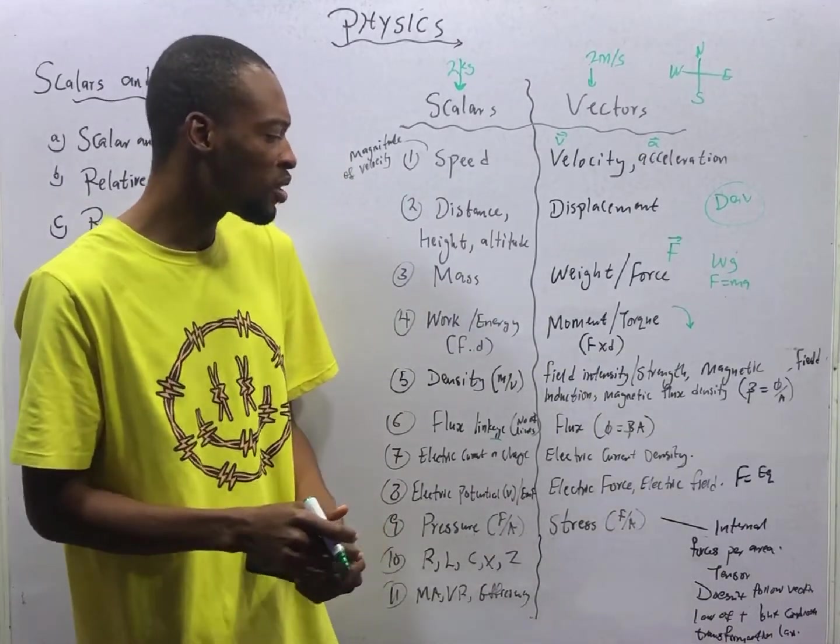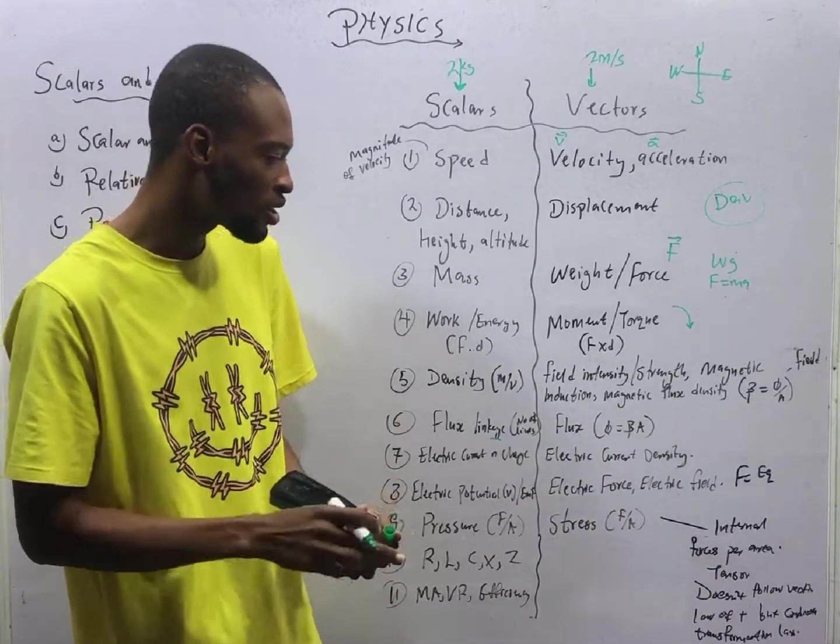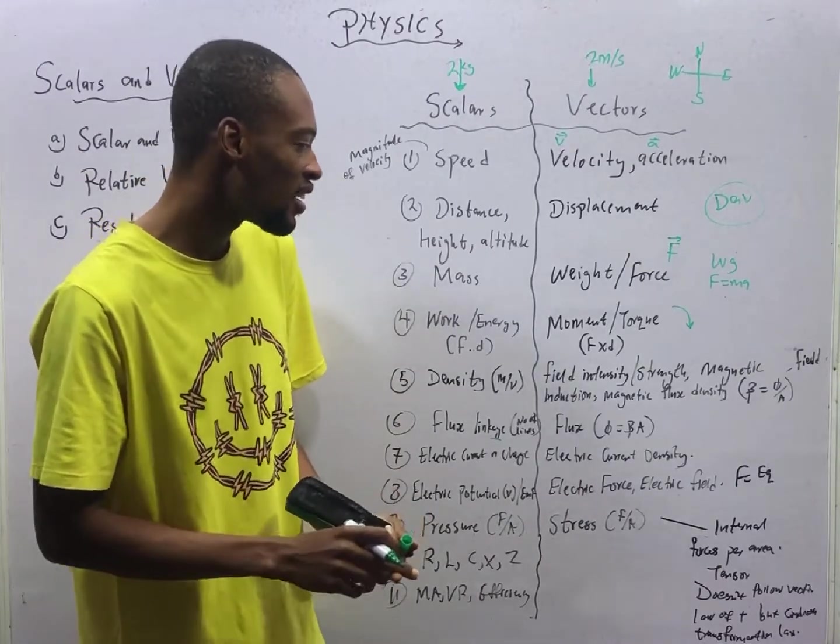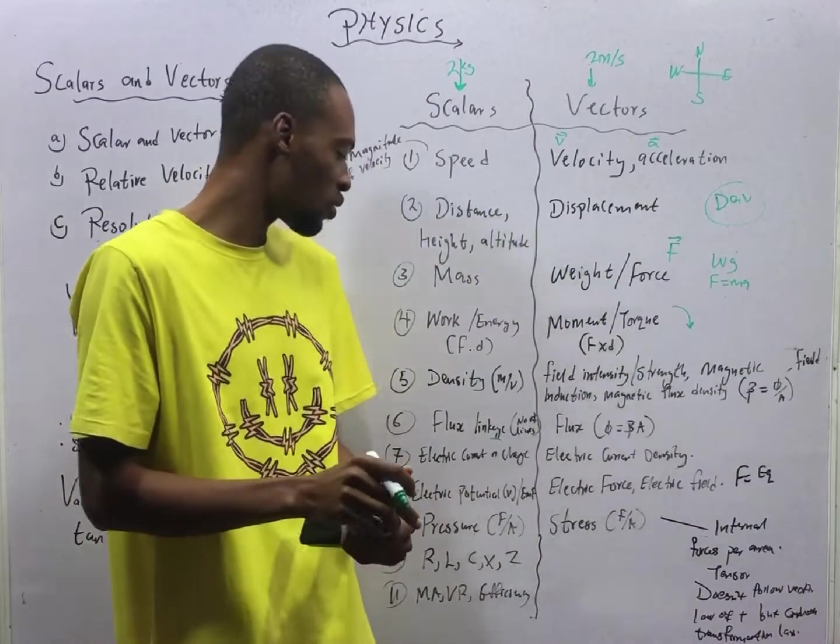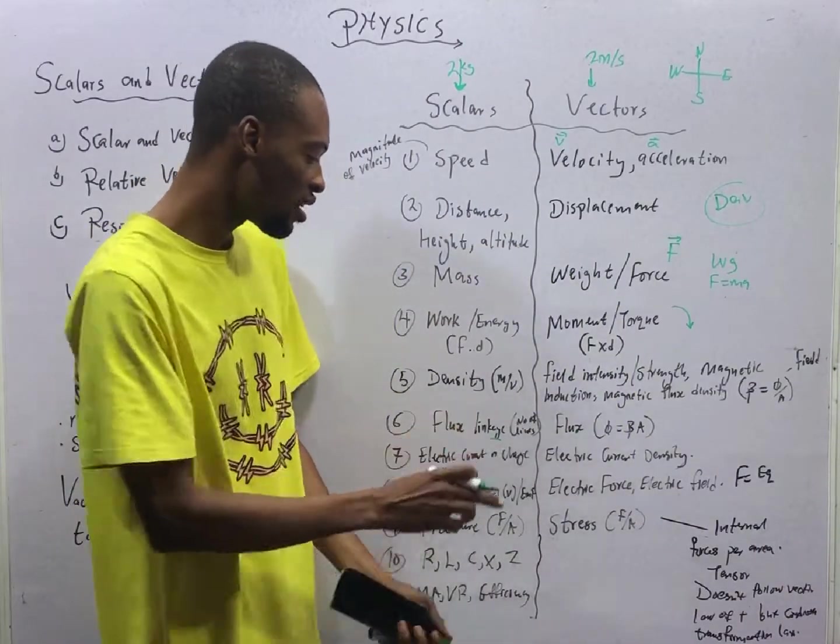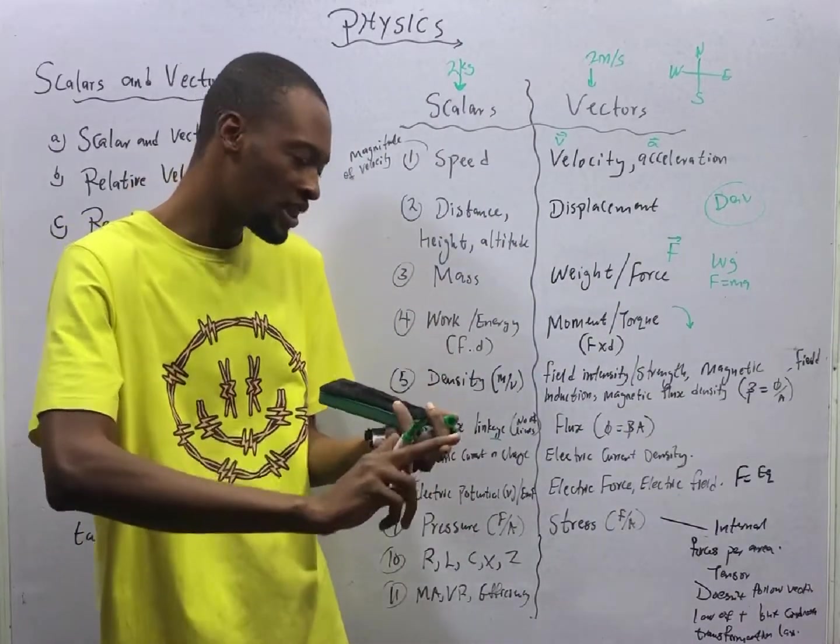But when you hear flux, flux is a vector quantity. Anything you hear flux, magnetic flux, and when you hear field, there is high chance that they are vector quantity. Not flux linkage. Just only flux or field. Electric current flux, field density or field strength, magnetic flux density, they are vector quantities.